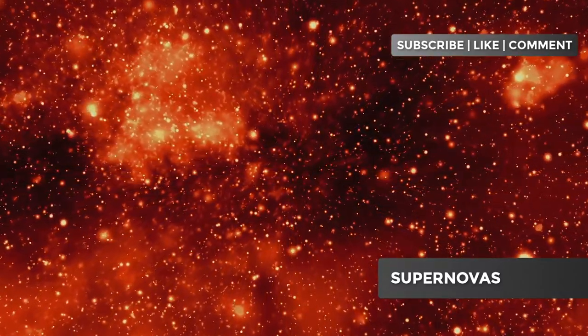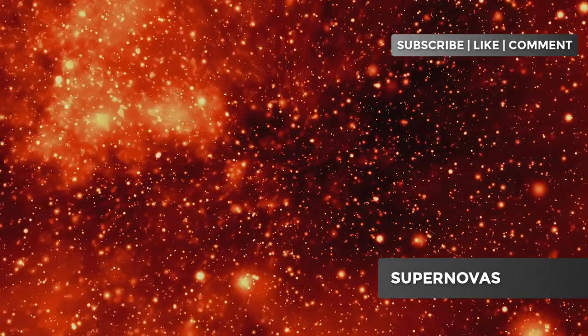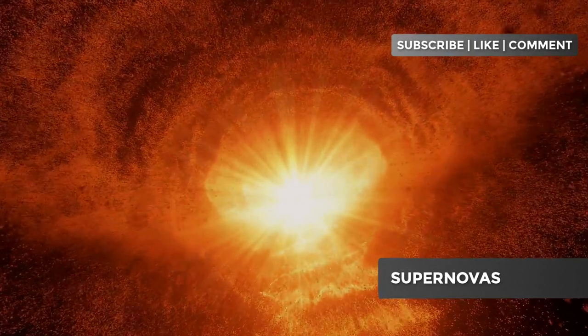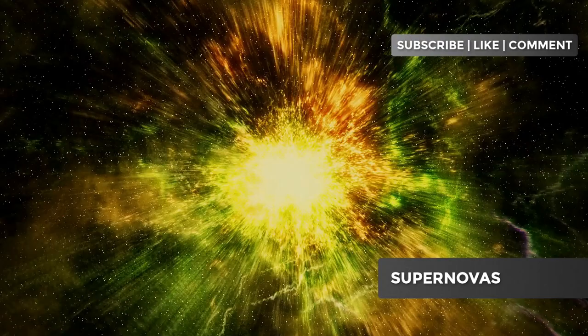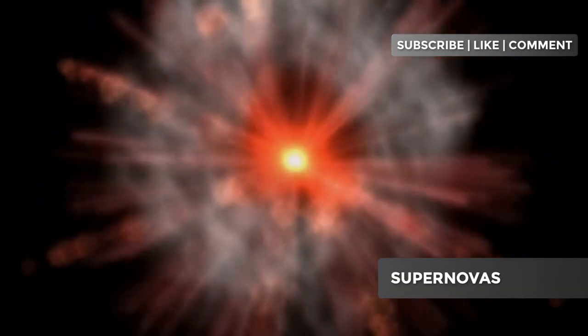Core collapse supernovas happen to stars that are at least eight times the mass of our sun. When these stars exhaust their nuclear fuel, they can no longer sustain the radiation pressure against gravity. The core collapses, causing a colossal explosion. This event releases an enormous amount of energy and can outshine an entire galaxy for a short period.